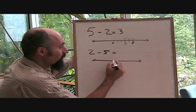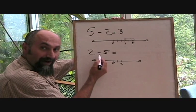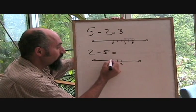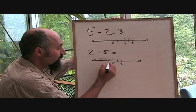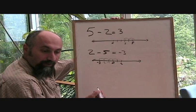1, 2, and you go back from 2, 5 steps. So you're going to go 1, 2, 3, 4, 5. So that's negative 1, negative 2, and that's negative 3. So the answer is negative 3.